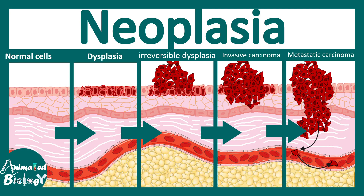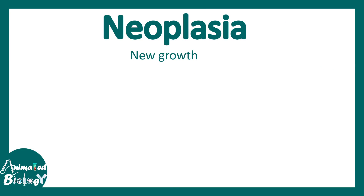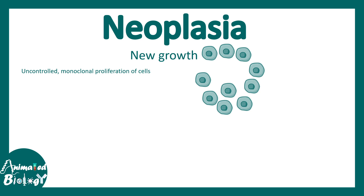In this video we'll be talking about neoplasia. The word neoplasia means new growth — uncontrolled monoclonal proliferation of cells. There would be a cell which would divide and be clonally multiplied to form many cells. This kind of scenario is known as neoplasia. Here the red cell has clonally expanded to give rise to all these blue cells. Neoplasia is not always cancerous; it could be benign or it could be malignant.